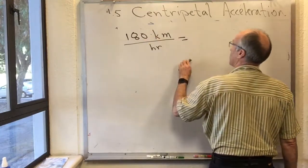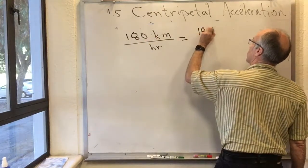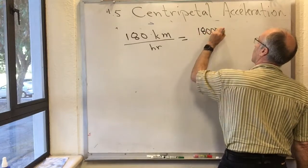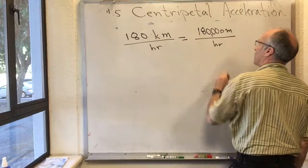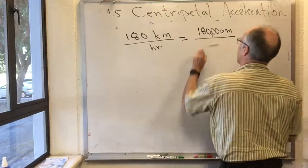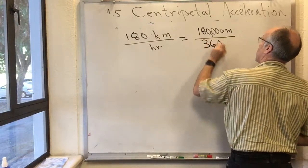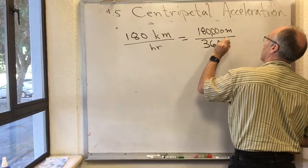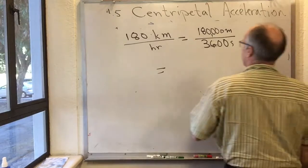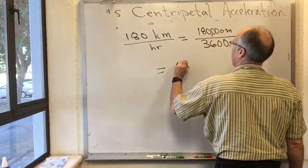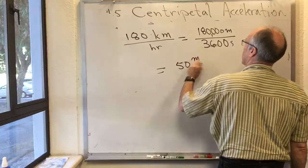And now, 180 kilometers per hour is 180,000 meters per hour. But an hour is 3,600 seconds. So that's 180,000 meters over 3,600 seconds. So we see that that is 50 meters per second.